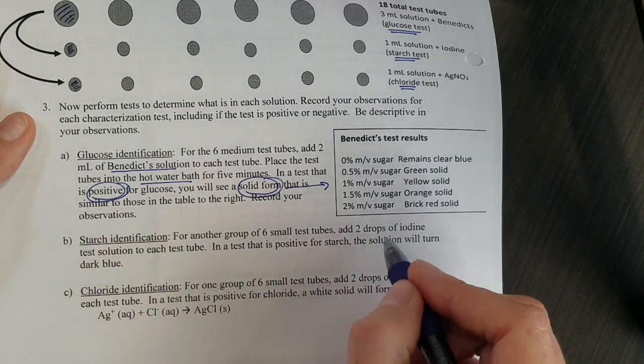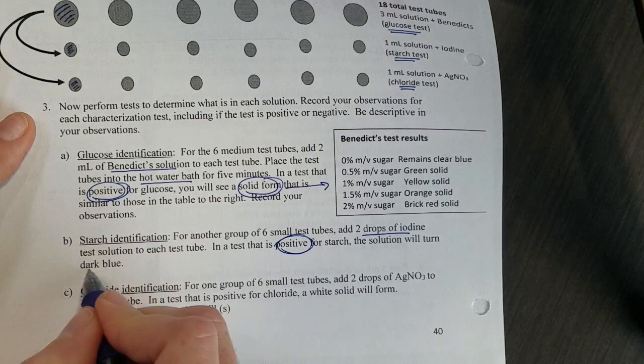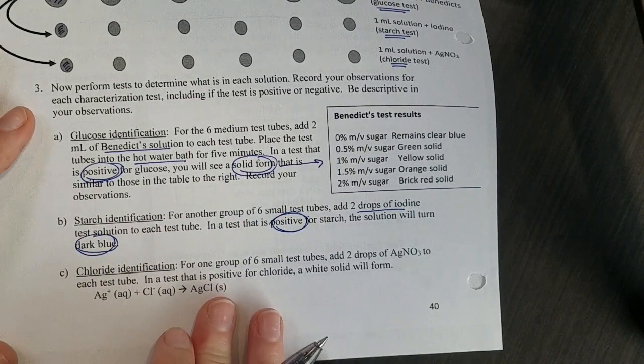Starch will be very simple. We're going to add iodine. If the test is positive the solution is going to turn dark blue, otherwise there's no starch present.